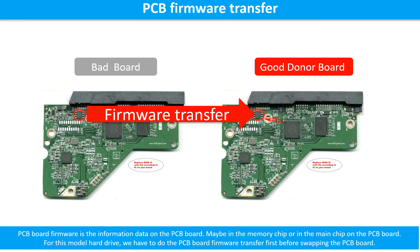PCB board firmware is the information data on the PCB board. It may be in the memory chip or in the main chip on the PCB board. For this model hard drive, we have to do the PCB board firmware transfer first, then we swap the PCB board. Otherwise, the new board will not work on the original hard drive.